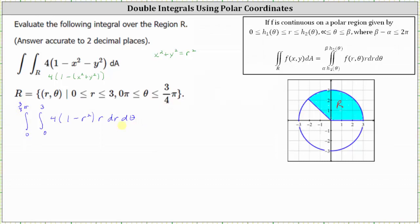Before we integrate, let's rewrite the integrand function one more time. We have four times r, and if we distribute four r, we have four r times one, which is four r, and then minus four r times r squared, which gives us four r cubed.